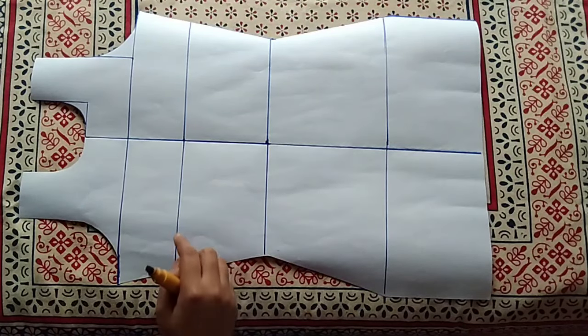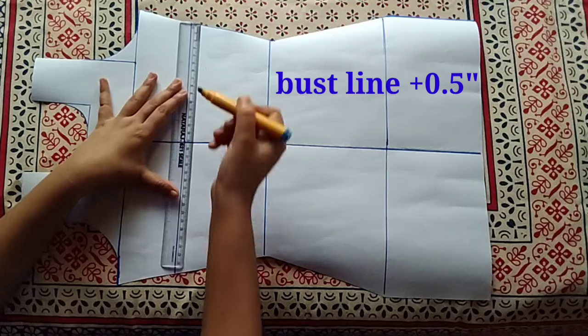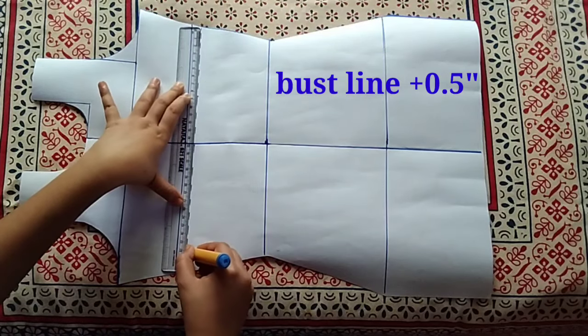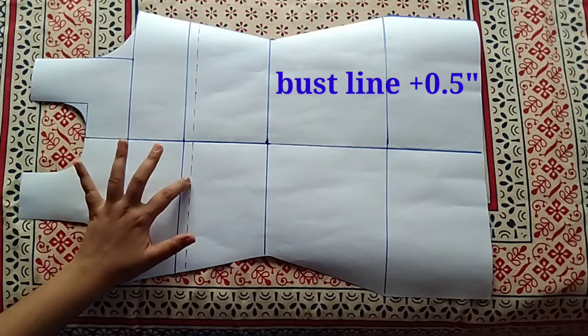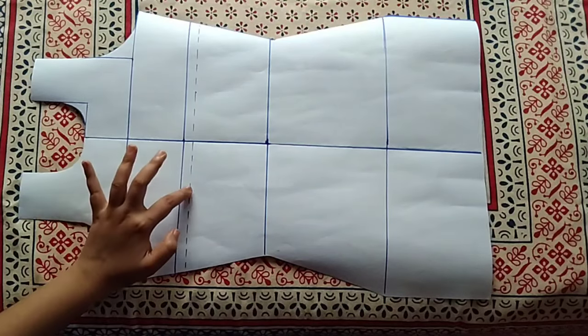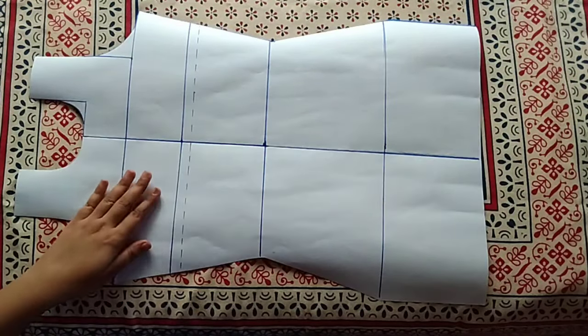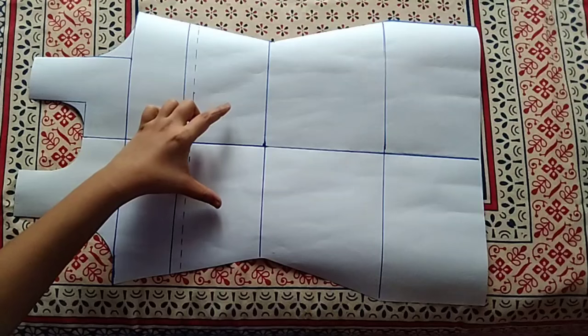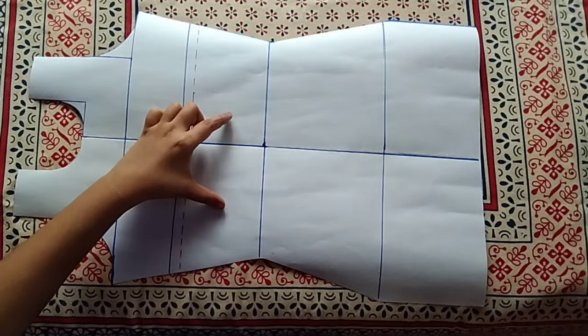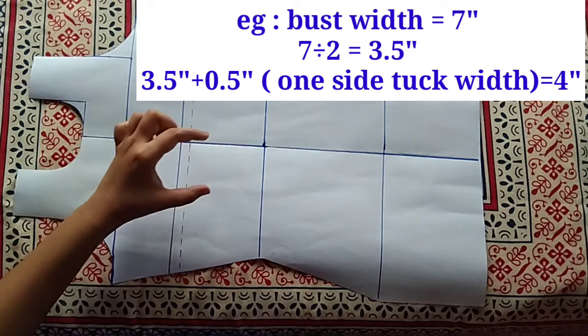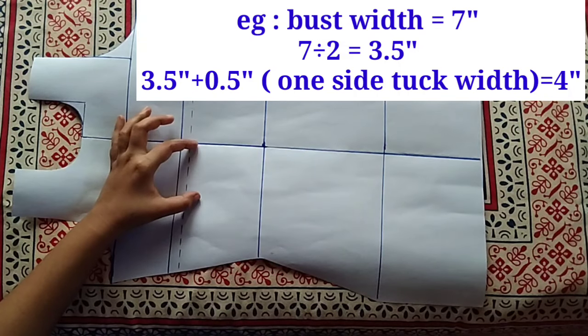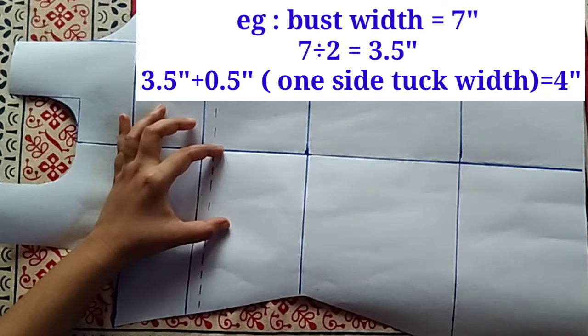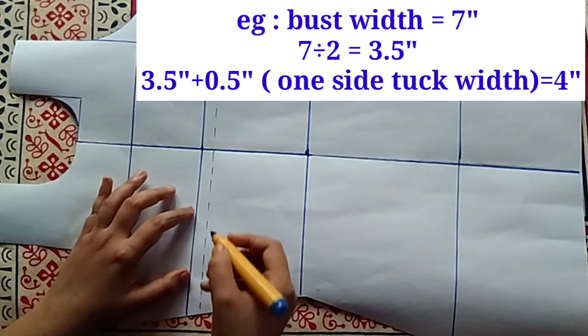I will keep the same idea. I will add 0.5 inches. Mark a straight line, then 0.5 inches. Now we have 7 inches, that is bust width. Then we have 3.5 inches. If we divide 7 inches by 2, we get 3.5 inches. Then 3.5 plus 0.5 equals 4 inches.